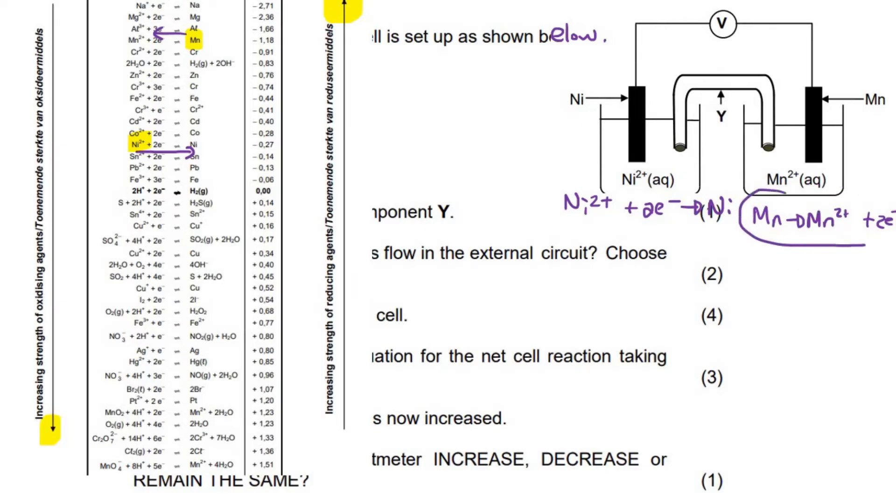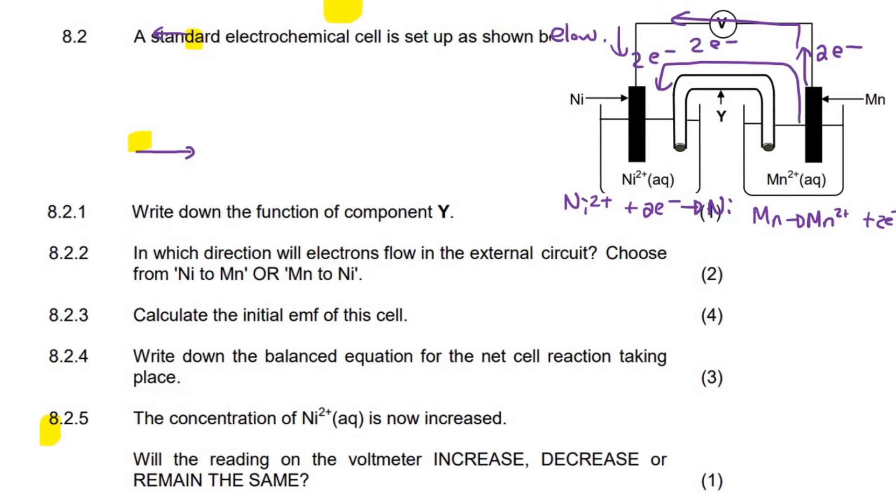So what it means is let's start over here. It tells us that the Mn is going to turn into Mn2+. And then there's going to be two electrons given away. So those two electrons are going to flow upwards like this. And then they're going to be absorbed over here in this reaction, because you can see that the Ni2+ is going to add two electrons to itself to become Ni. So the electrons are going to go in this direction. So we are going to say from Mn to Ni.